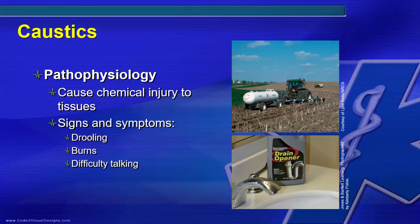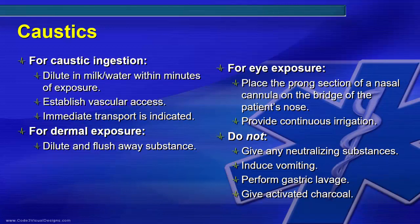Signs and symptoms you may see include drooling, difficulty and pain with swallowing, and hypoperfusion or shock. If a caustic is ingested, it begins to burn the mucous membranes immediately. The patient may also have burns of the mouth, face, and neck, and if the substance drips onto the chest, you may see burns there as well.